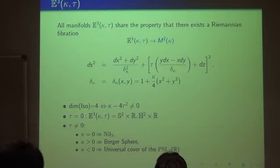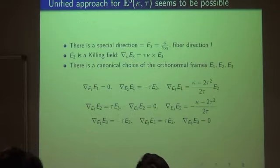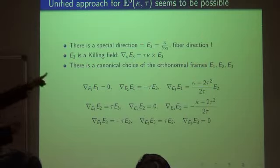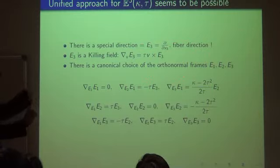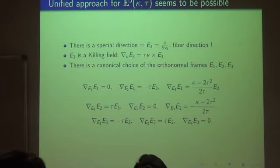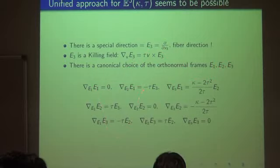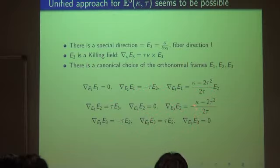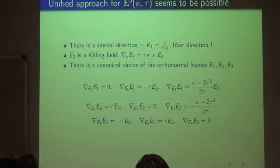Now I will explain our result about this space. It has a special direction: the only rotation with axis E₃ is an isometry, and any other rotation is not. The translation along this direction is also an isometry, so this is a Killing field. The parameter tau appears in the covariant derivatives. If tau is zero — the NIL-3 case — only tau terms appear, making the computation simpler. That's one reason we obtained the result first in NIL-3.